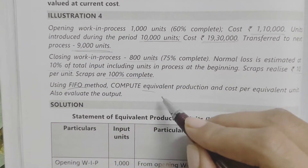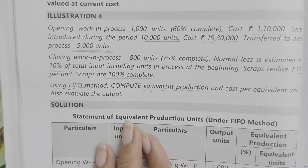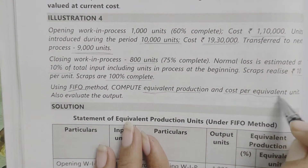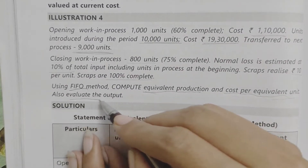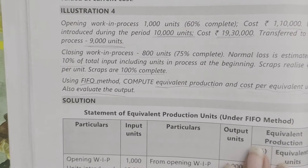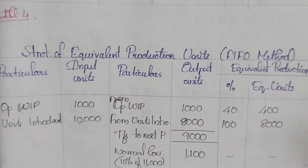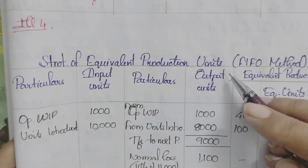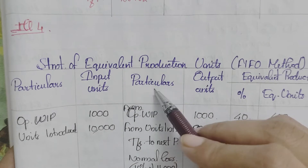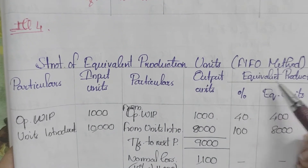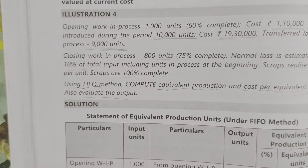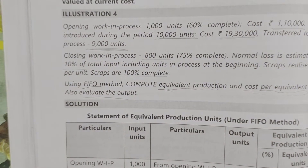Calculate equivalent production. We prepare a Statement of Equivalent Production Units under the FIFO method. The columns are: Particulars, Input Units, Output Units, Equivalent Production Percentage, and Equivalent Units.